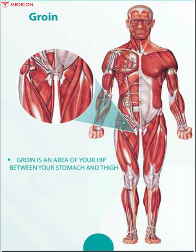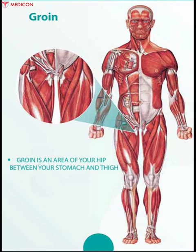Groin is an area of your hip between your stomach and thigh. It is located where your abdomen ends and your legs begin. The groin area has muscles that work together to move your legs, called adductor brevis.